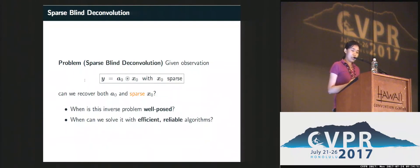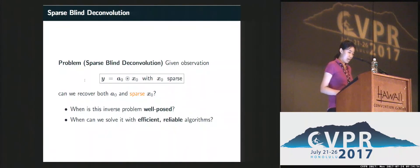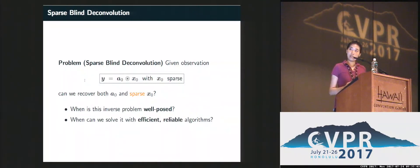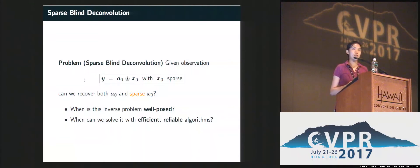The observation is a convolution of some kernel and the sparse signal x0. We want to know: is it possible for us to recover both signals? We want to know if this problem is well-posed, and also if so, whether we have an algorithm that can efficiently and reliably recover both signals.